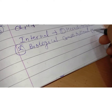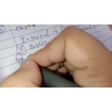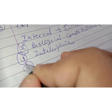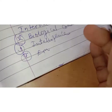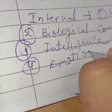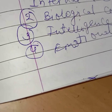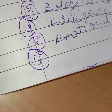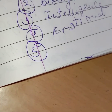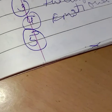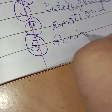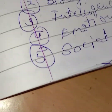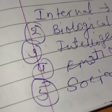The third internal factor is intelligence, which is also inherited from parents. Then there are emotional factors — our parents and family members influence these emotional factors. We cannot change these factors; this is the initial situation, though we can take further steps.